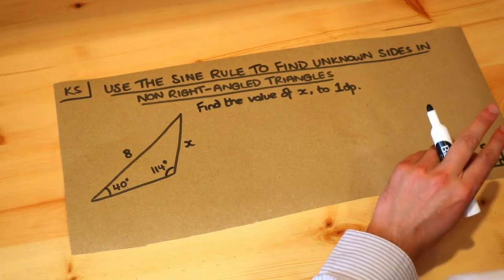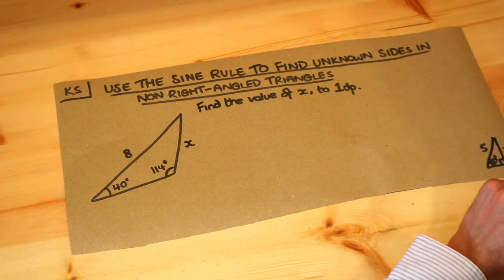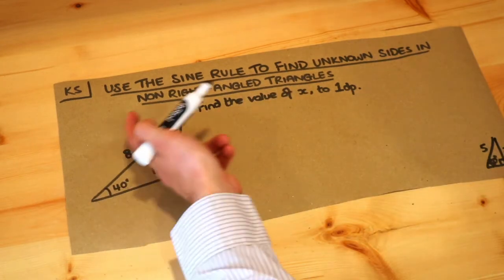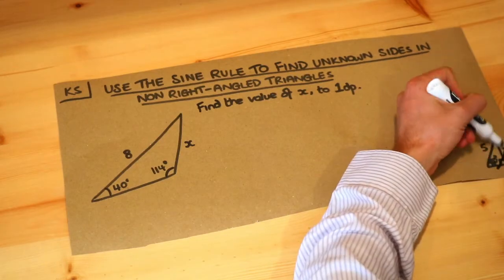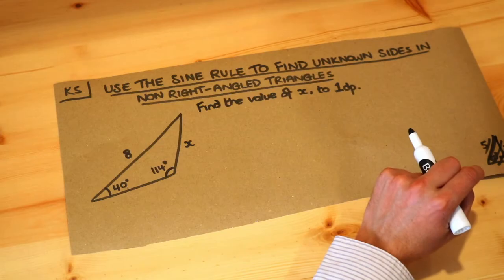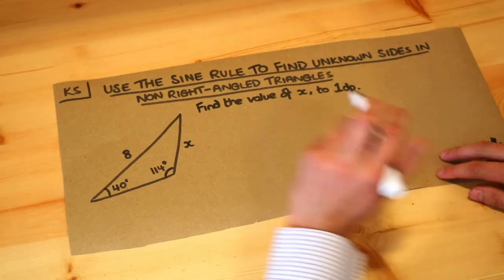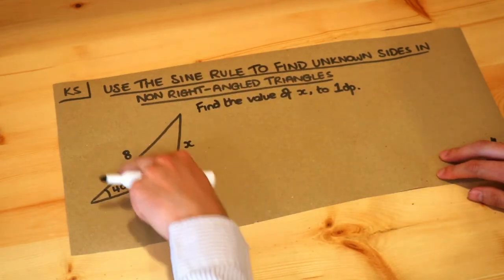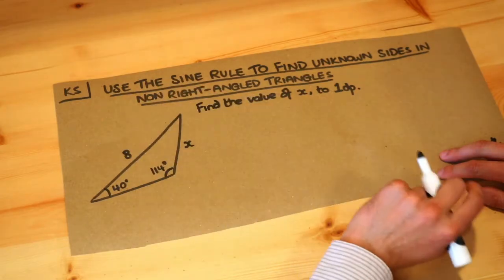However, SOHCAHTOA is only applicable to right-angled triangles. So what do we do if we have a non-right-angled triangle? We have separate formulae for this. There's one thing called the sine rule, and let me write the sine rule first and then we'll see how we can apply it to this triangle.